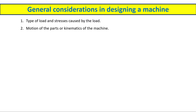The second consideration is the motion of the part, or the kinematics of the part. The motion of the part means that part may have some mechanism — for example, it could be a rotating part or a reciprocating part. That motion we need to take into consideration, and based on that we need to design the part.